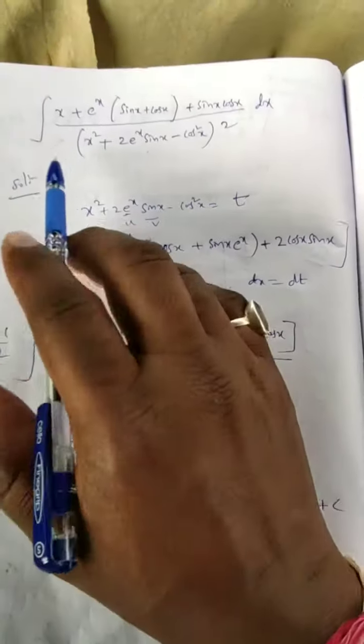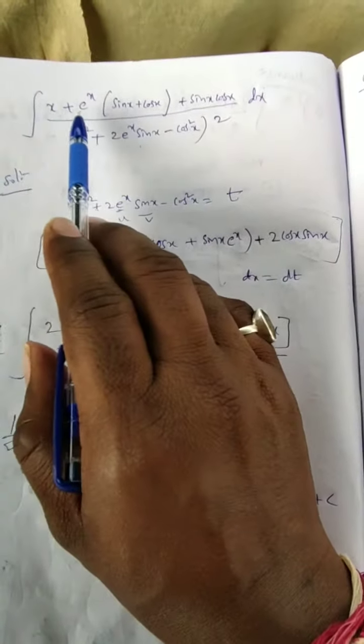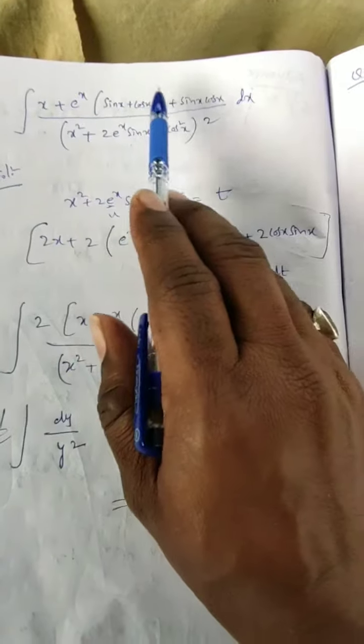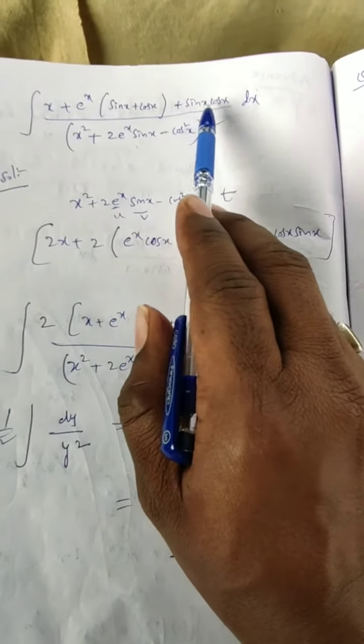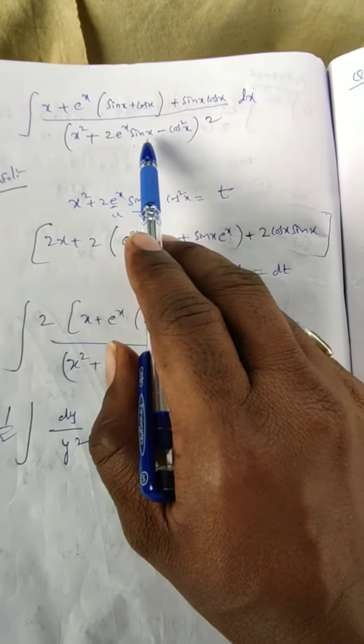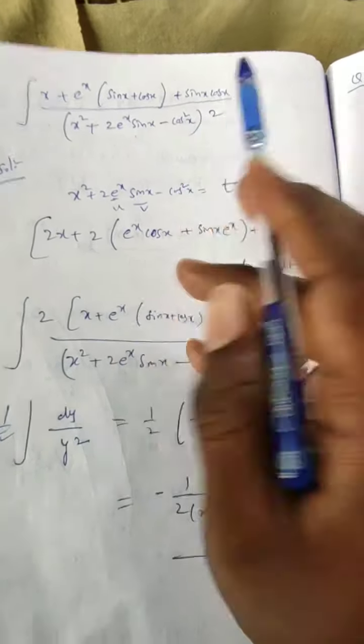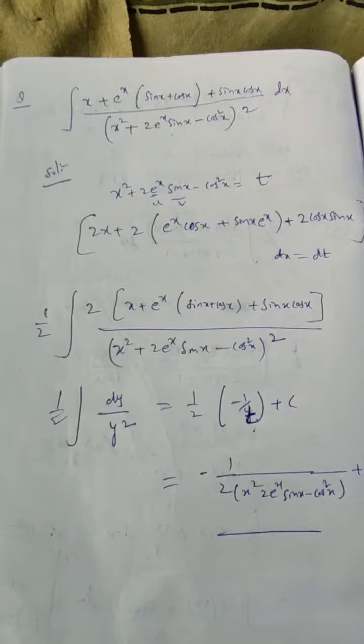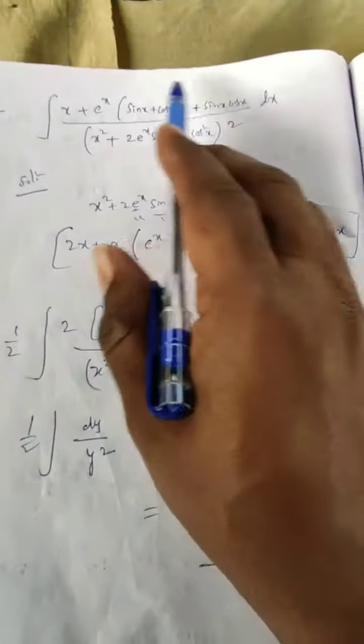Let us start. Today is another question: integration of (x + e^x)(sin x + cos x) + sin x cos x upon (x² + 2e^x sin x - cos² x)² dx. This is the question you need to solve.